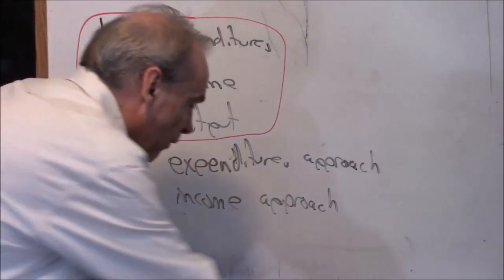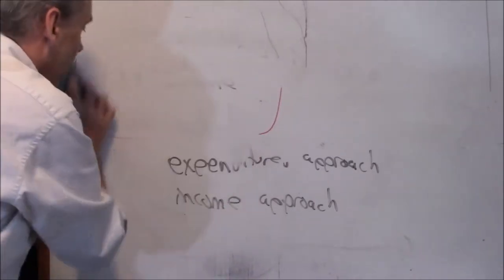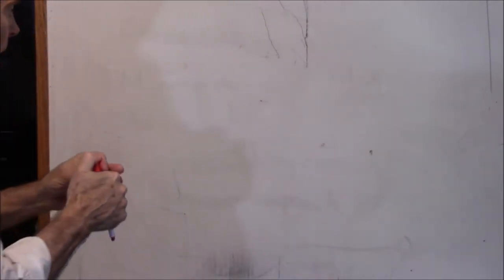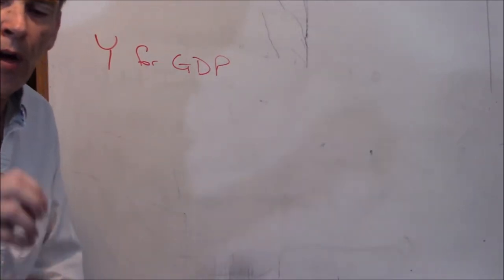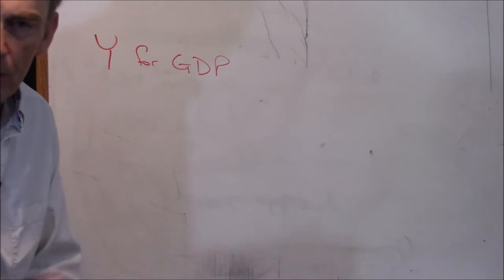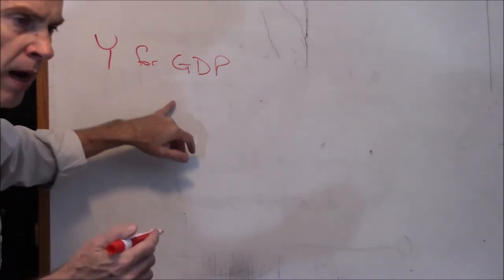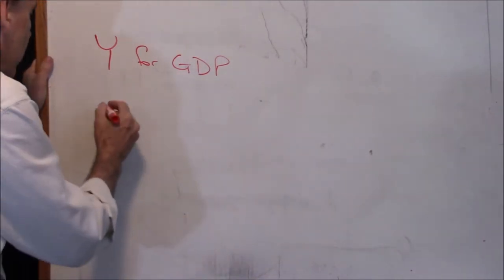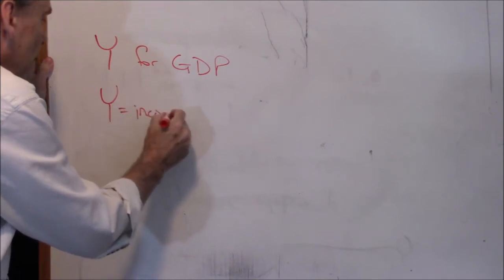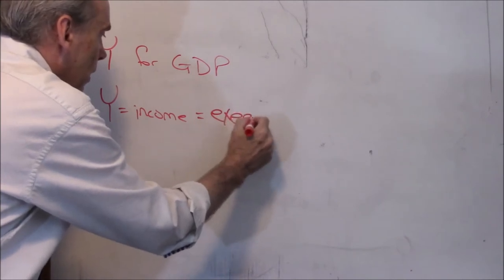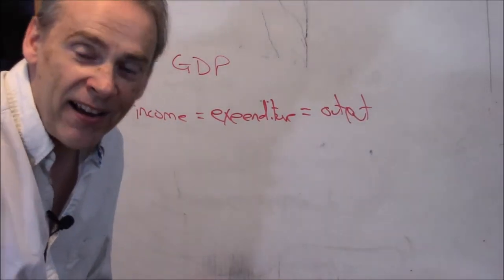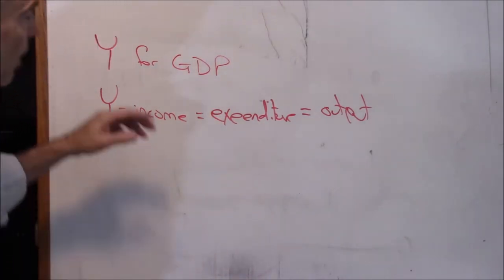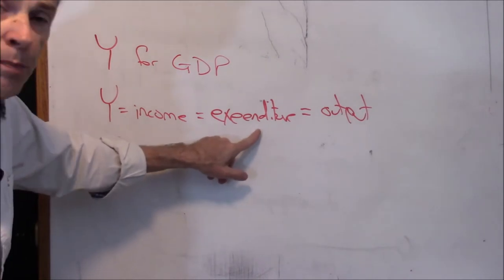So that turns out to be very important to this concept and to the one we'll cover later that contradicts it. We're going to use Y for basically gross domestic product — the total dollar value of all goods and services produced and sold in the U.S. in a given year. Sometimes I'll refer to Y as total income, sometimes as total expenditure, and sometimes as total output, depending on context. But it's all the same number.